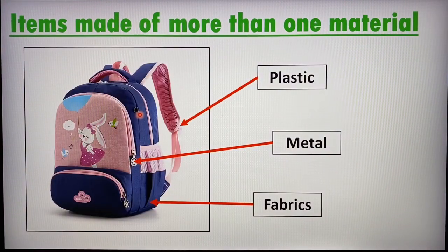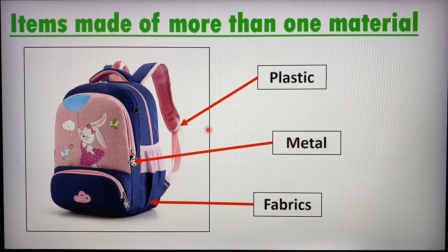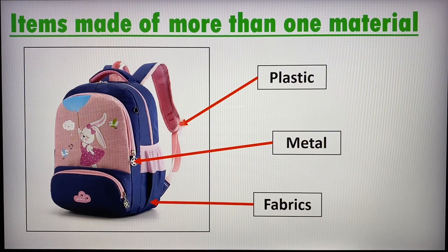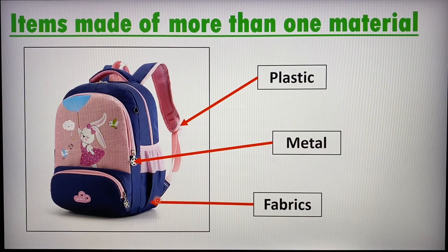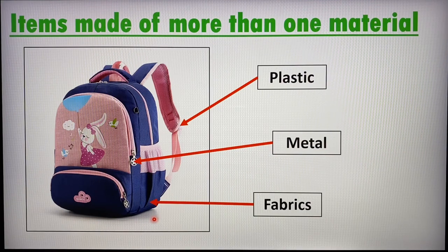Now I'd like to introduce the idea that an object or item can be made of multiple materials. A very simple example is a bag made of plastic in some parts, metal on the zip, and fabrics for most of the bag. A single item can be made of multiple or a few materials.